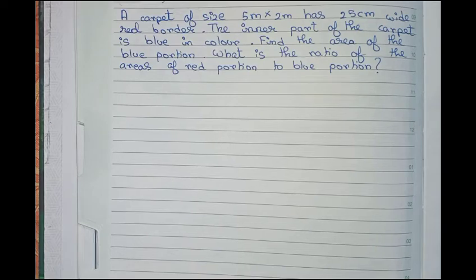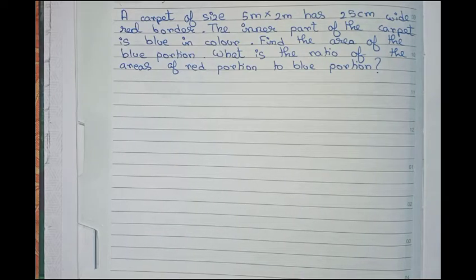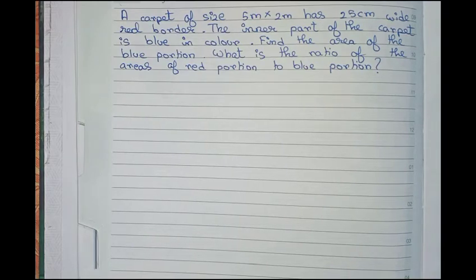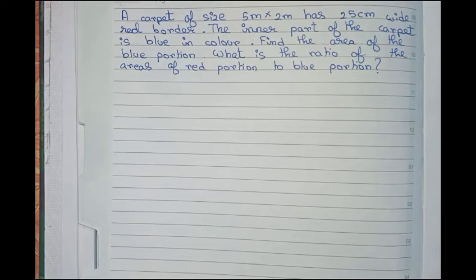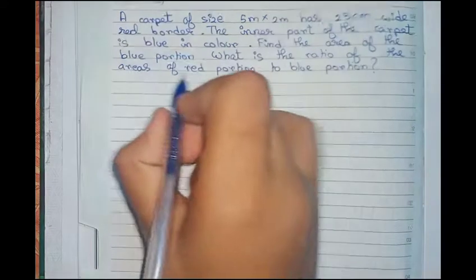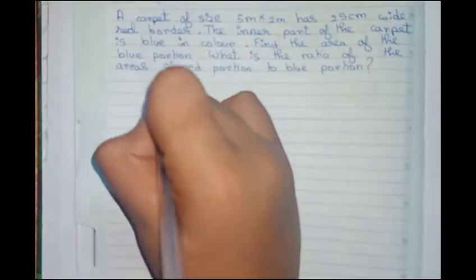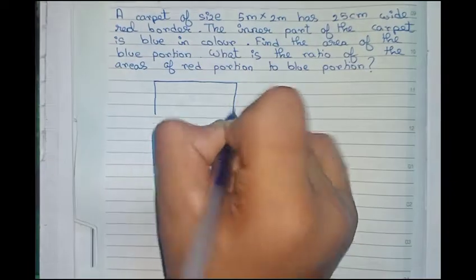Hello guys, welcome to this video. In this video, our question is: a carpet of size 5 meter into 2 meter has a 25 centimeter wide red border. The inner part of the carpet is blue in color. Find the area of the blue portion. What is the ratio of the area of the red portion to the blue portion?